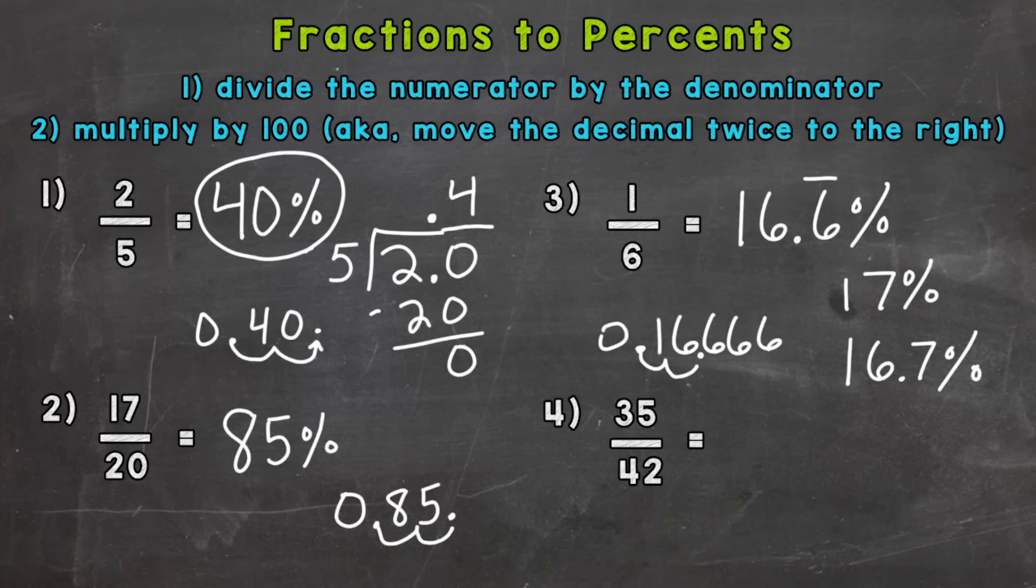Number four is another repeating decimal. We get 0.83̄. So again, same steps. So multiply by 100, move the decimal twice, and we get 83.3̄ percent.